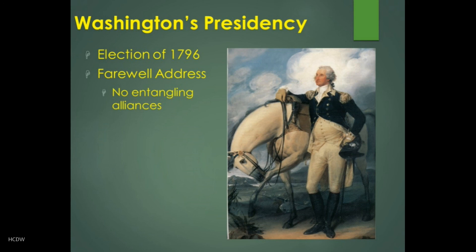Incidentally, Washington, on his way out of office, delivered a poignant farewell address in 1796, which was not actually read publicly but was in the form of a letter. This addressed a number of issues confronting the nation, among them the growing factionalization and partisan politics, but also he made an appeal for no entangling foreign alliances — which is something we will come back to in this course and really throughout our history time and time again.